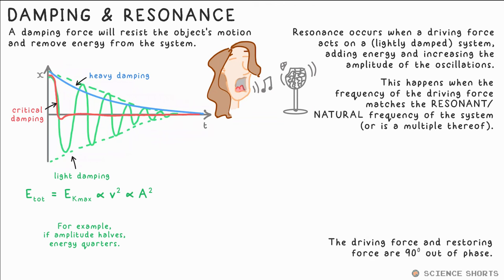When resonance occurs, the driving force and the restoring force are 90 degrees out of phase with each other, which means the driving force pushes most when the object is at equilibrium, much like the wheel under a swinging pirate ship ride, pushing it higher and higher every swing.